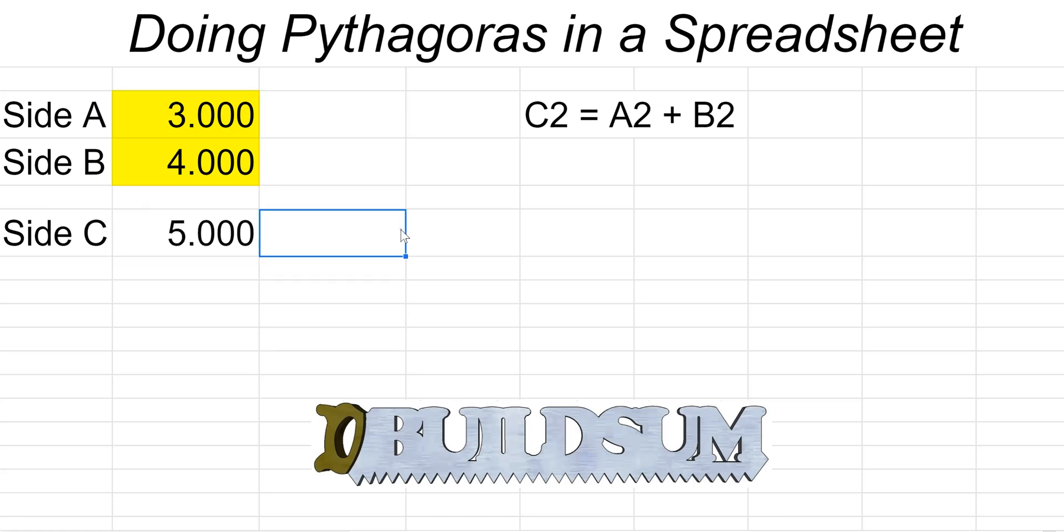We will get our formula or rather the correct answer. So we know that the square root of 3 squared plus 4 squared is going to give us 5.